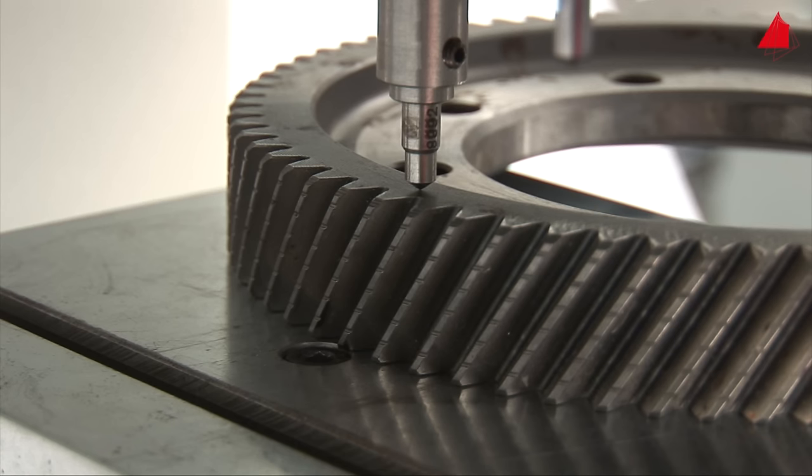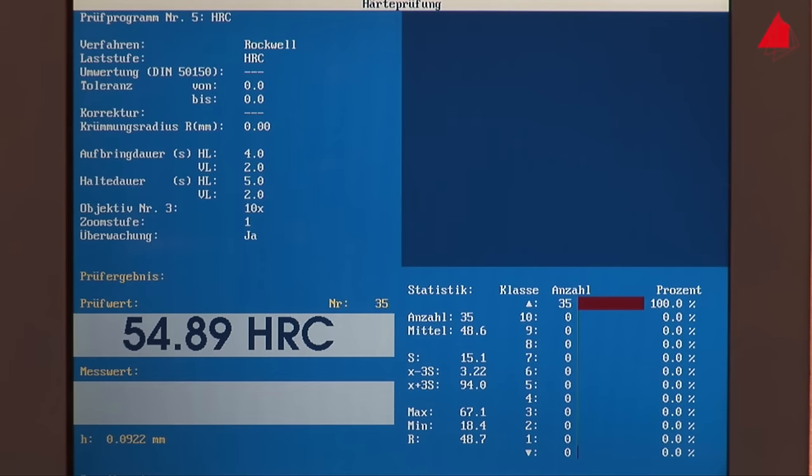That's why the Rockwell hardness test is used so often in automated production lines. That's it! The Rockwell hardness of our gear wheel is 55 HRC. This result is displayed on the screen.